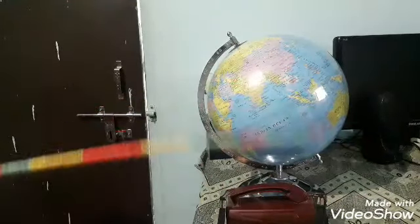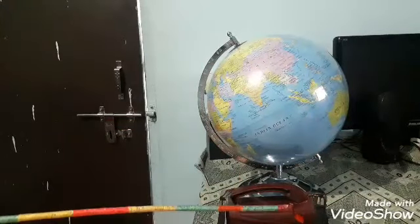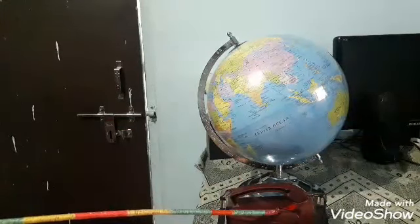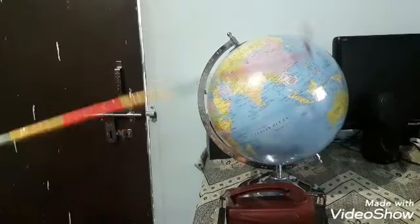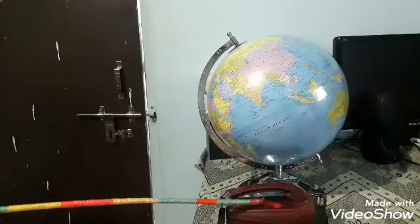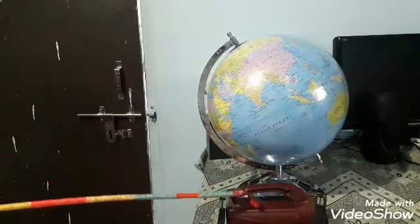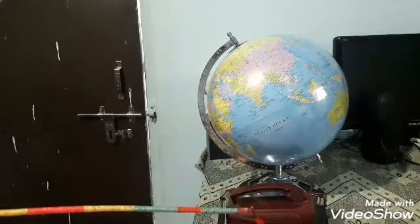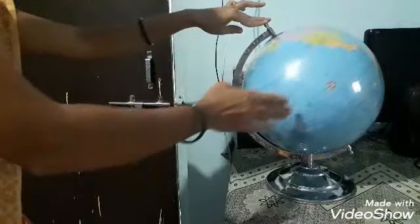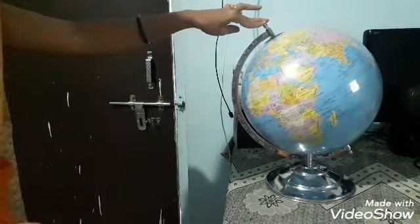Students, here I have a globe and a torch. Consider torch as a sun. With globe and torch, I am going to explain the cycle of day and night. Earth rotates anti-clockwise. What is mean by anti-clockwise? Have you seen watch?